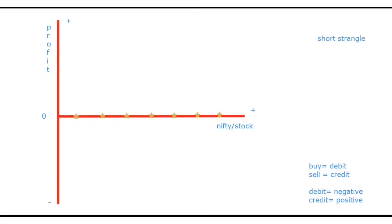So now, what is a short strangle? Short strangle ka matlab kya hai? Short strangle, long strangle ka opposite hai. So in a long strangle, we used to buy the OTM options — one OTM put buy, another OTM call buy.